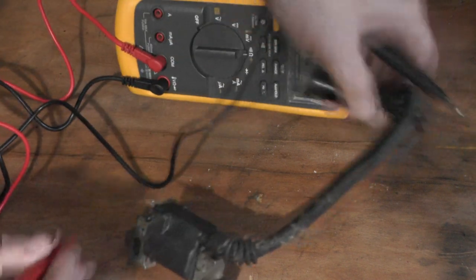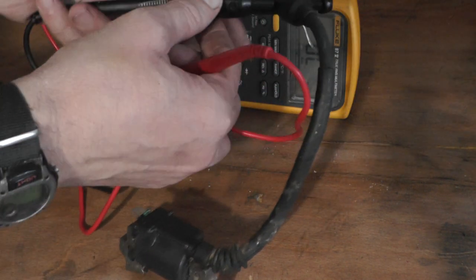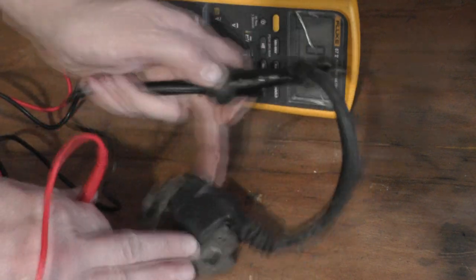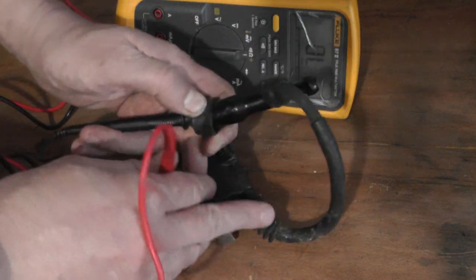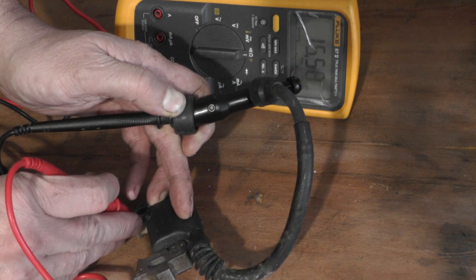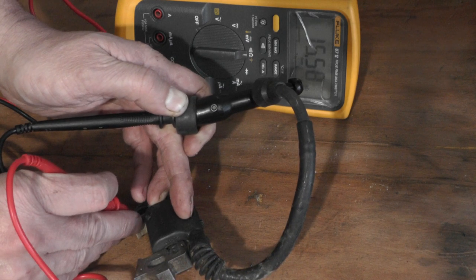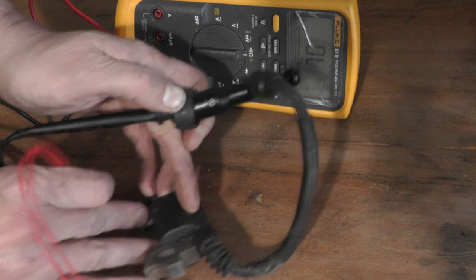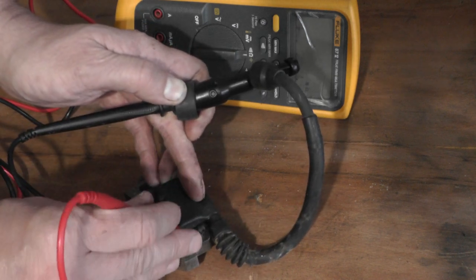For the secondary, you put your lead inside so it touches the metal termination side. 15 kilo ohms again. Supposed to be 10, but it is working pretty well and it's sparking well.